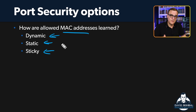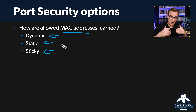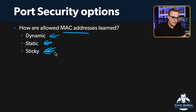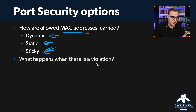By default, you only allow one MAC address. When a PC sends traffic, that MAC address is learned by the switch's MAC address table, and it's also written to the running configuration. You can determine that more MAC addresses are permitted, and then either statically configure them or allow them to be learned via the sticky option.